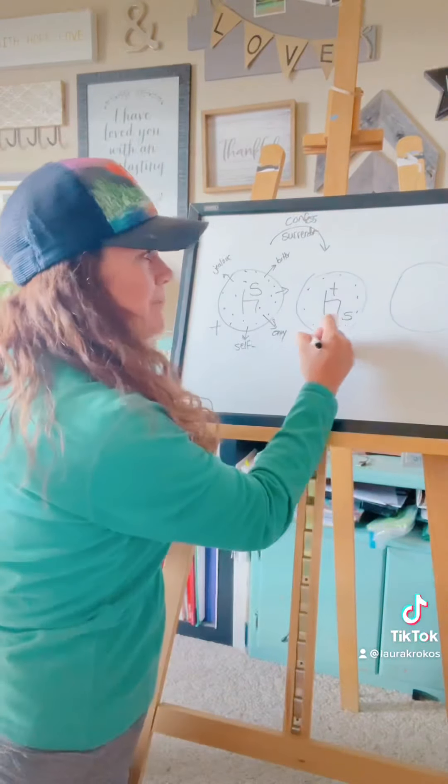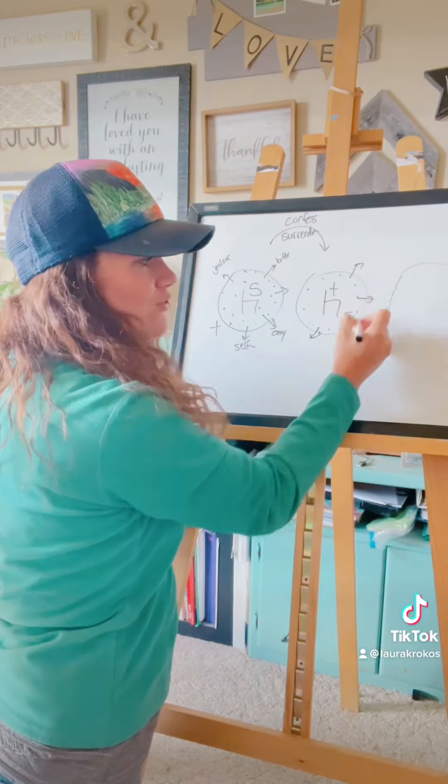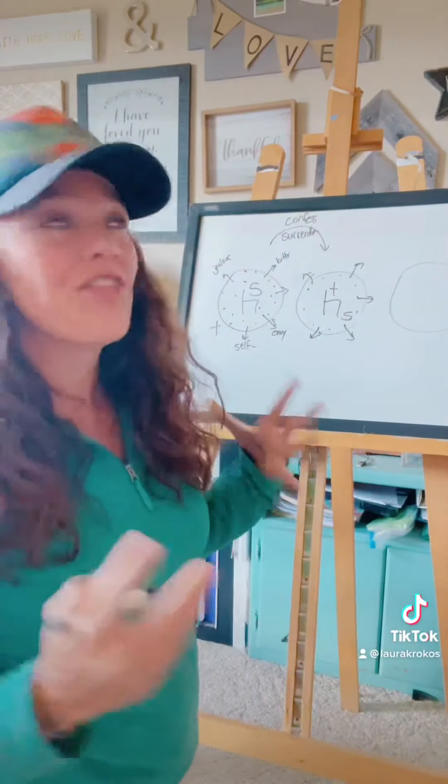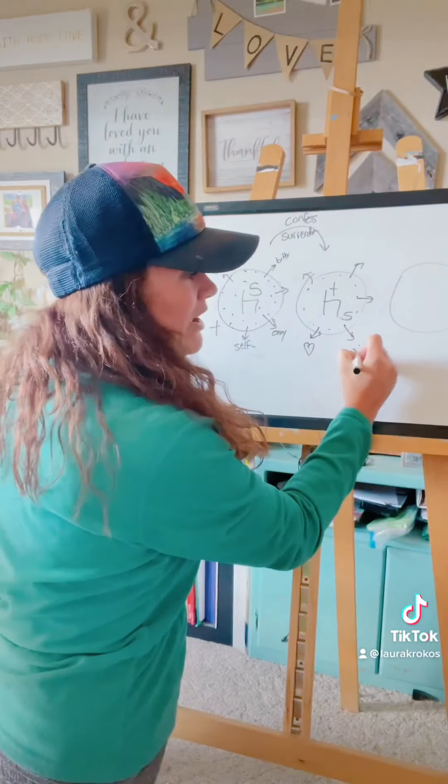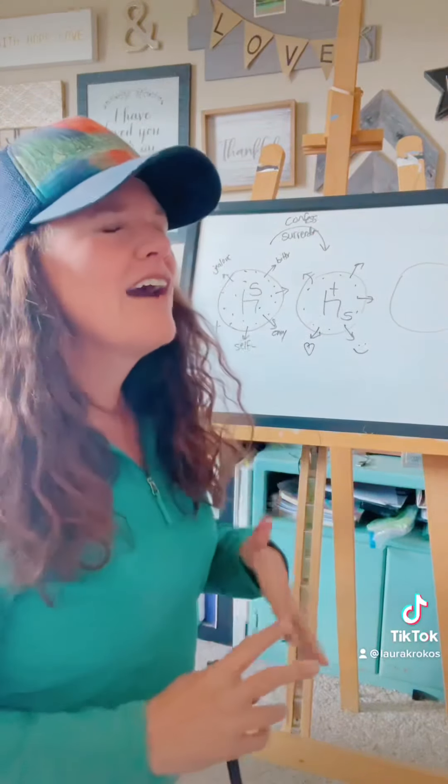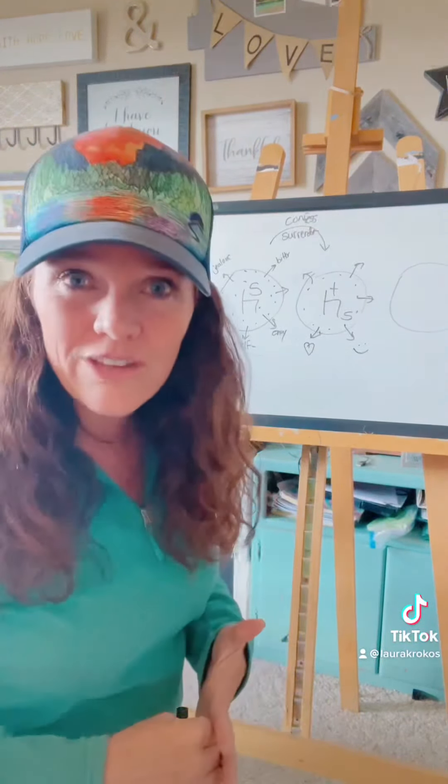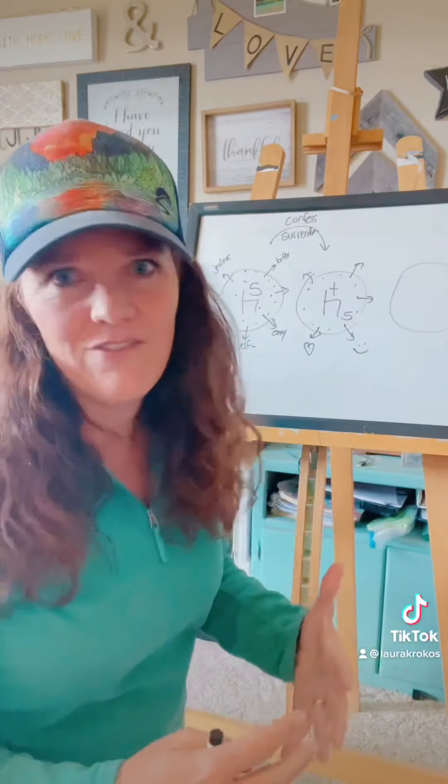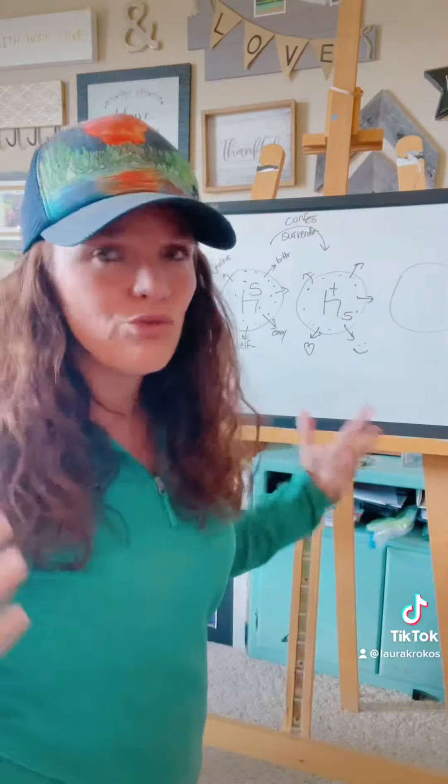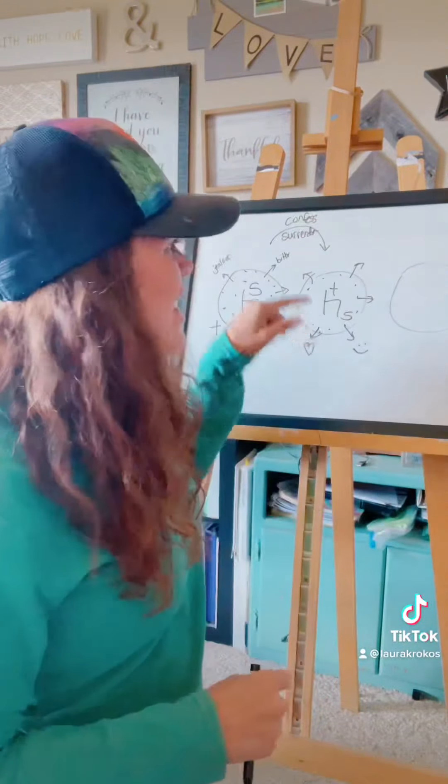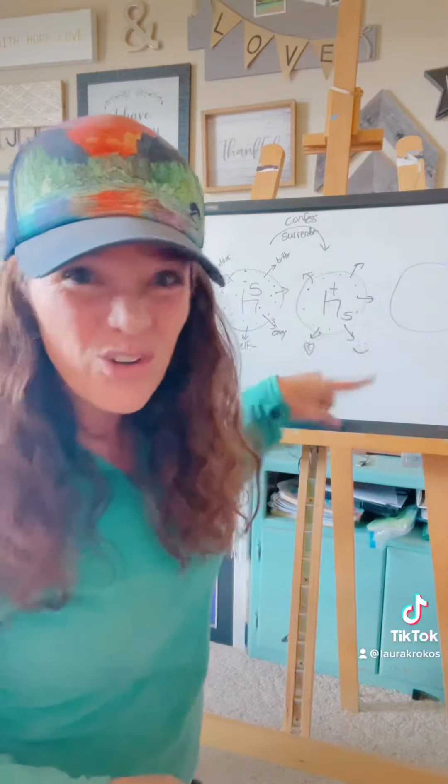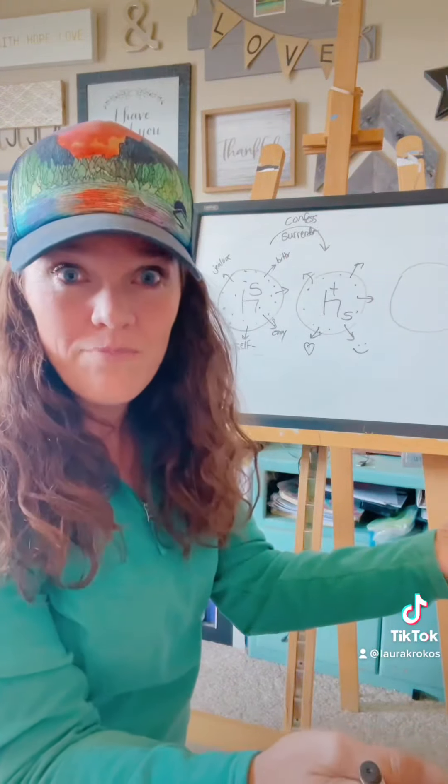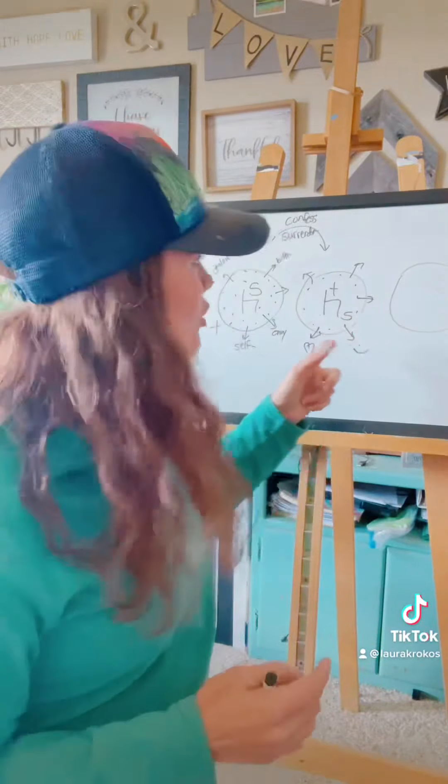What comes out of them is what Galatians 5:22 and 23 call the fruit of the Spirit. This is the wonderful things like love and joy and peace and patience and kindness and goodness and gentleness and self-control, faithfulness, things that you love to have in your friends and those around you. That's what's coming out of this person because the Holy Spirit is living his life through them. That's naturally what comes out.